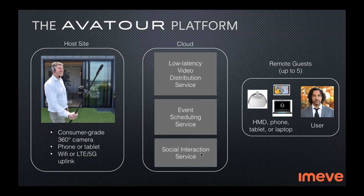Here's a block diagram of how the platform works. On the host side: Bluetooth headset, consumer-grade 360 camera, and a phone or tablet. Uplink is important — we require a minimum of about six megabits up, which can be a challenge. We're working closely with telcos; from our Nokia background we have good relationships worldwide. We just finished working with Sprint on their 5G network launch, demonstrating the system using production 5G equipment seeing 40 Mbps up and 600 down. Good LTE or Wi-Fi is also quite viable.